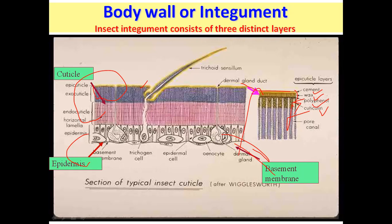The polyphenol layer is a non-static layer of the integument in which various types of phenols are present. It is mostly used for the formation of proteins, and it is resistant to acid and organic solvents. The cuticlin layer is the innermost layer of the epicuticle; it is strengthened by the polyphenol layer and acts as a growth barrier, also playing a role in permeability.